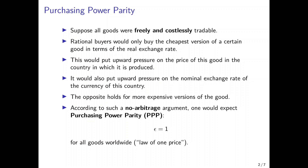So if there is a certain homogeneous good that can be freely and costlessly traded all around the world, then a rational buyer would search for the country in which this good is cheapest and buy it only there. Suppose for the sake of argument that the goods we are talking about are bicycles and the cheapest producer all over the world would be the Netherlands.